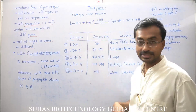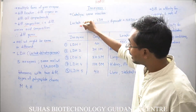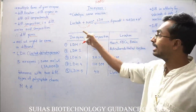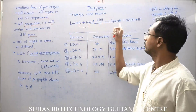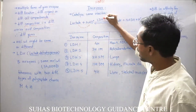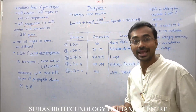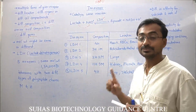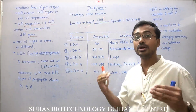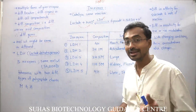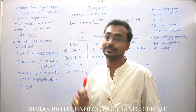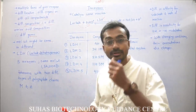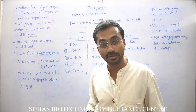Lactate plus NAD+ — two hydrogens from lactate are transferred to NAD+ to form NADH + H+. As two hydrogens are removed, lactate gets converted into pyruvate. This reaction is catalyzed by LDH, that is lactate dehydrogenase. This enzyme is present in different organs and shows 5 isozymes.